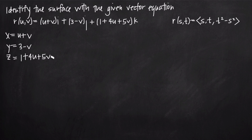Once we have parametric equations that define the surface, we want to eliminate our parameters. Our parameters are u and v, so we want to eliminate u and v and get an equation in terms of only x, y, and z. We do that by solving the first two equations for u and v, and then plugging them into our equation for z.